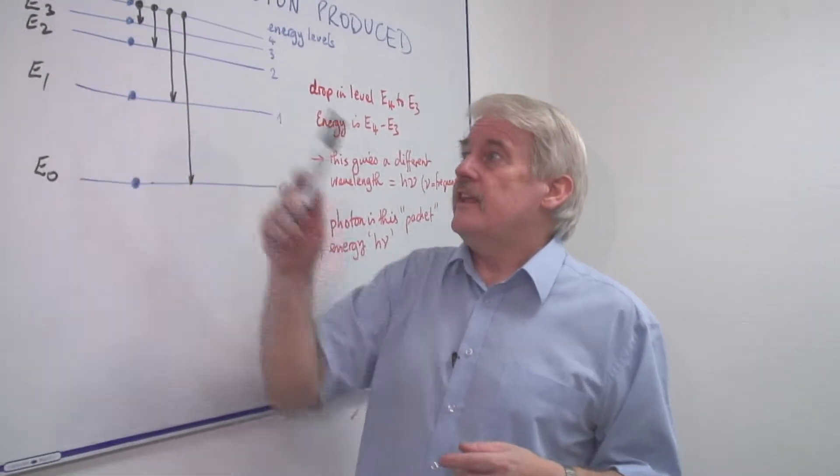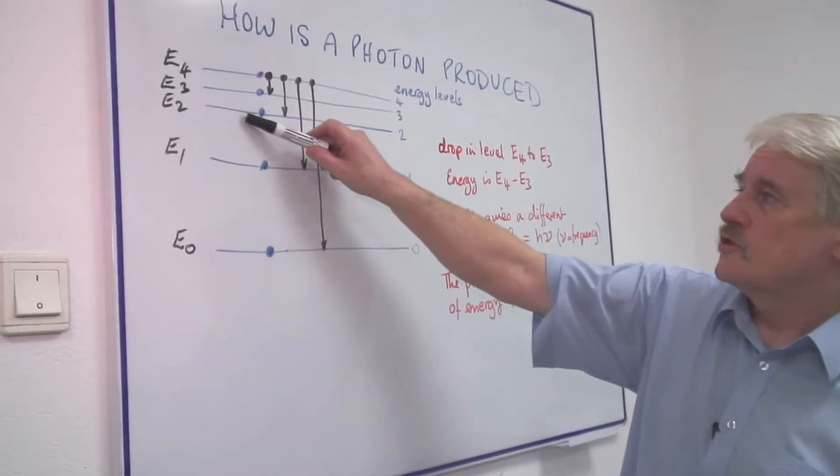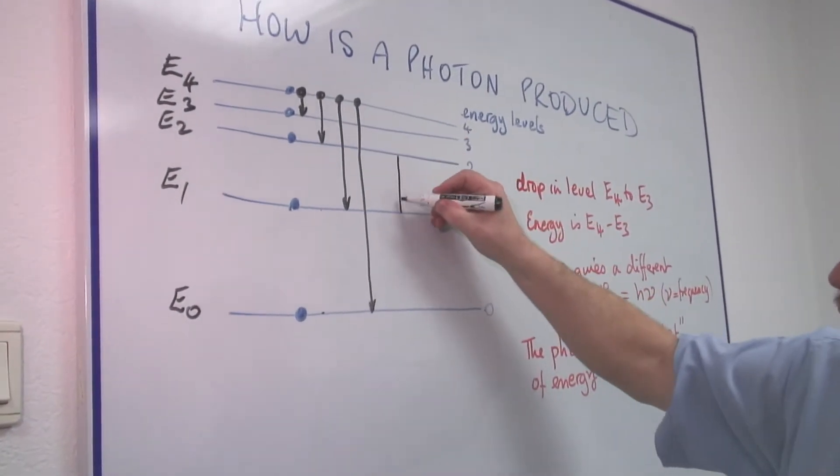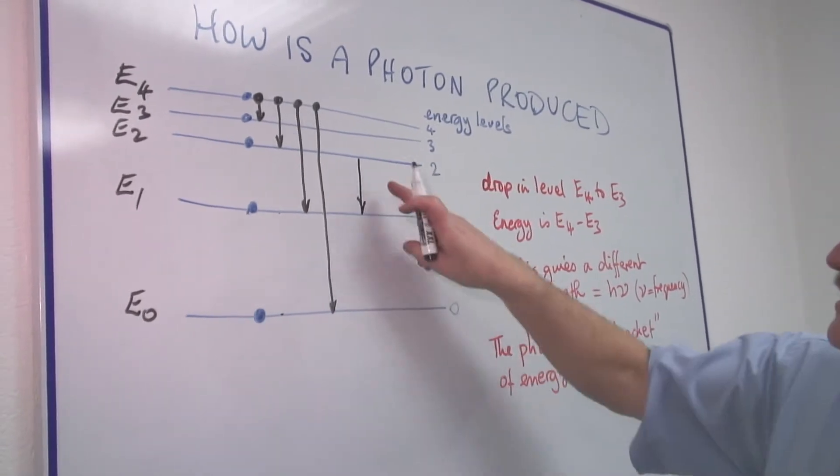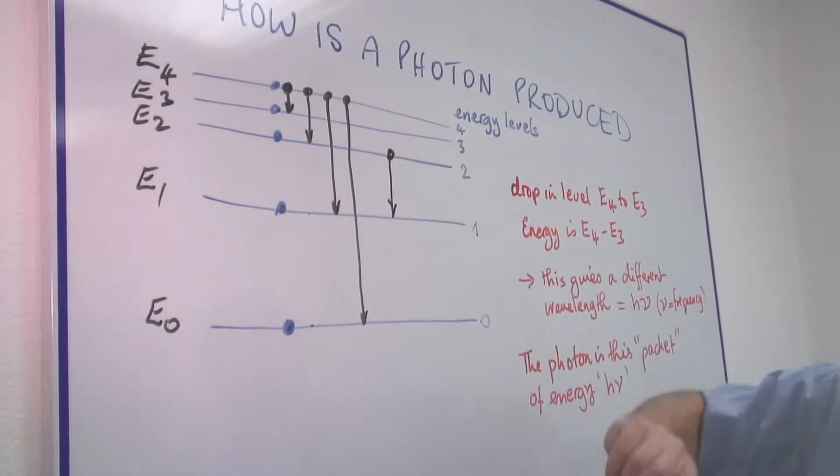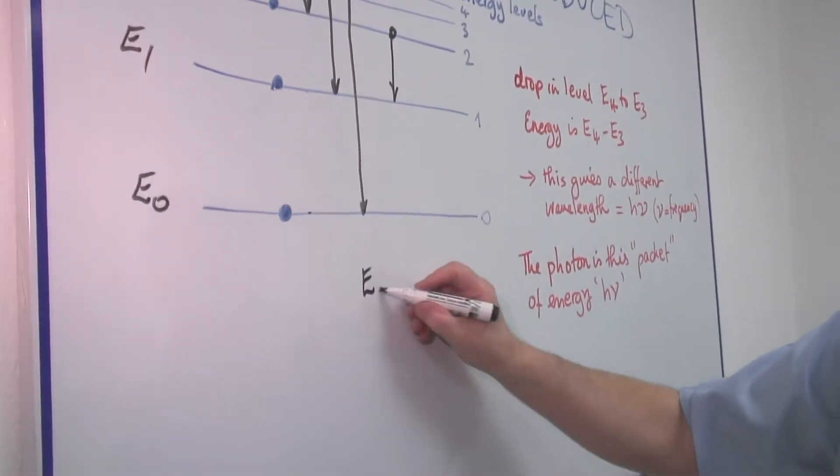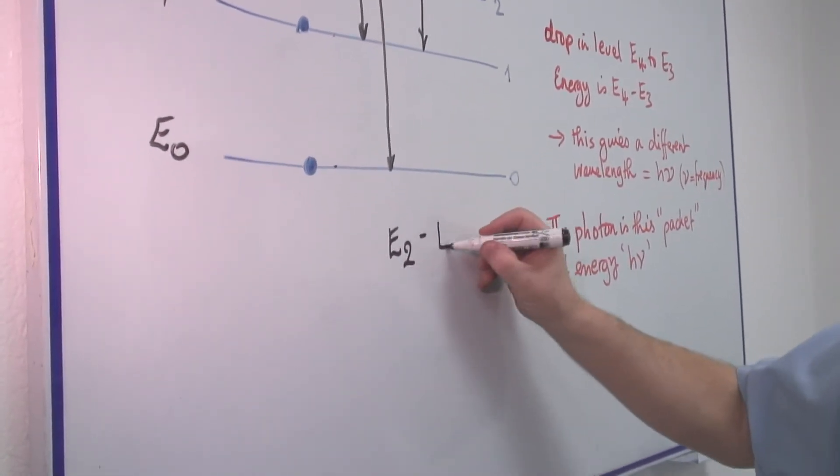But when the electron, E1, say in level two, falls down into E level one, we can see that there is a difference in energy. And the difference in energy here would be E2 minus E1.